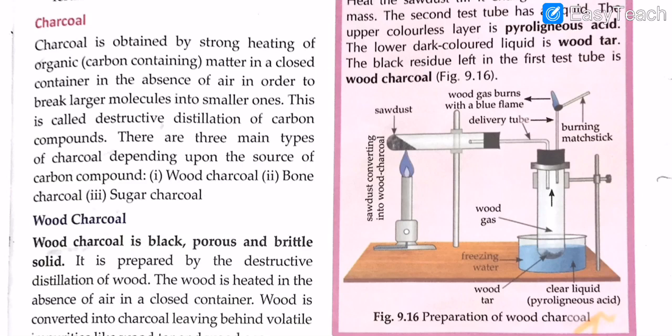While this process happens, there are three main types of charcoal depending on the source of the carbon compound. One carbon compound gives wood charcoal, another gives bone charcoal (also called animal charcoal), and sugar cane gives sugar charcoal.